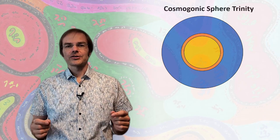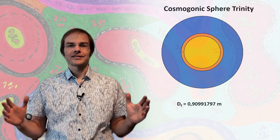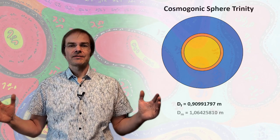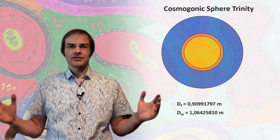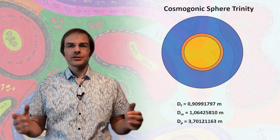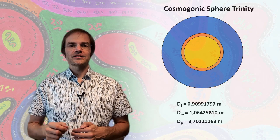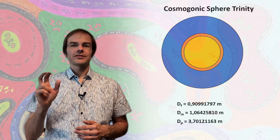And the first had a diameter of 91 centimeters, about that size. The second, only slightly larger, 107 centimeters. The third, which still fit in this room, it was 3.7 meters, roughly. So these three spheres he called the cosmogonic or cosmogenic sphere trinity.